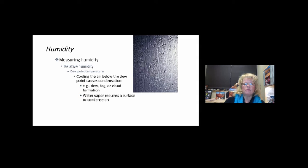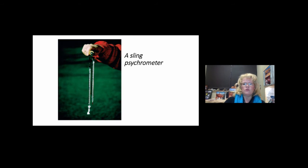We measure relative humidity by looking at several things. Dew point temperature is where air is cooled below dew point, causing condensation or precipitation—dew, fog, cloud formation. Water vapor requires a surface to condense on, called a condensation nuclei. We use a device called a psychrometer to measure relative humidity. There are other ways with today's technology, but this was the old-fashioned hand version.